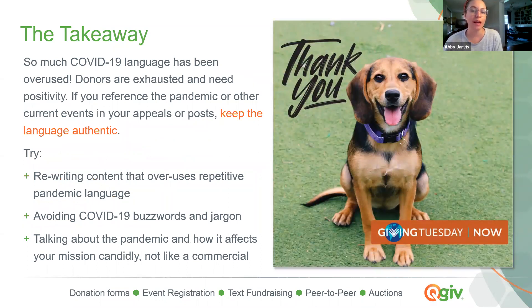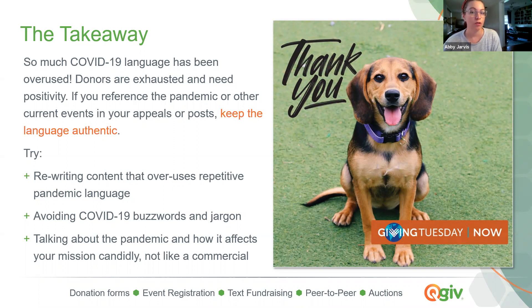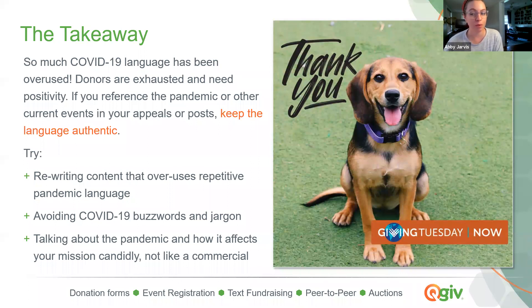I know a lot of people at the beginning of the pandemic were making fun of 'now more than ever' phrases or 'in these uncertain times' phrases, and I've seen that taper off. But I did want to reiterate that if you are referencing the pandemic or other current events in your appeals, be transparent and authentic — and by that I mostly mean stay away from buzzwords or overly repetitive language that gets used a lot. You don't want your donors to think that you're mindlessly sending out these appeals. Talk about your mission and talk candidly about how your ability to work toward that mission is being affected by current events, and just be honest with your donors about what's going on and how they can help.